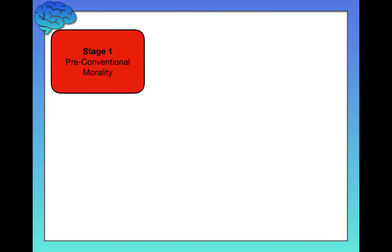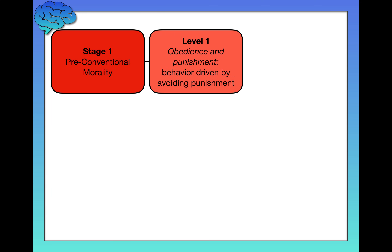Starting with Stage 1: pre-conventional morality — the more basic levels of moral reasoning. Level 1 is obedience and punishment. For people at this level, behavior is driven by avoiding punishment. Thinking back to the Heinz dilemma, someone at Level 1 might say, "No, Heinz should not have stolen the drug because he might go to jail — he might be punished, and he doesn't want that."